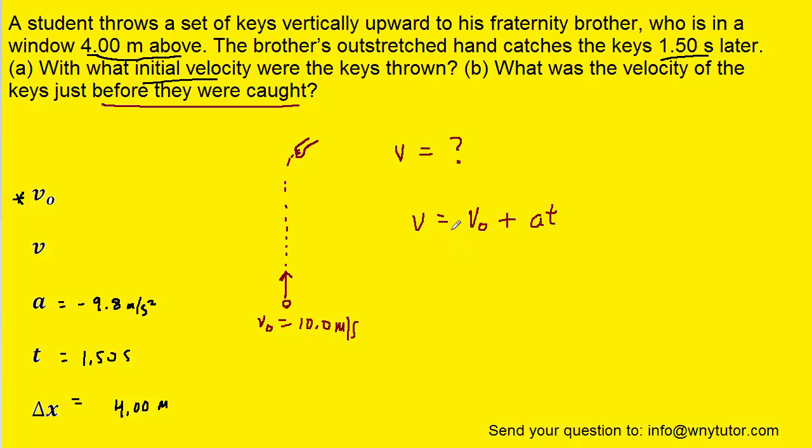We know that final velocity is equal to the initial plus acceleration times time. So, all we really need to do is just plug in the known values. The initial velocity was 10 meters per second. The acceleration is negative 9.8, and the time is 1.5. So, we'll pick up our calculators and plug this in.